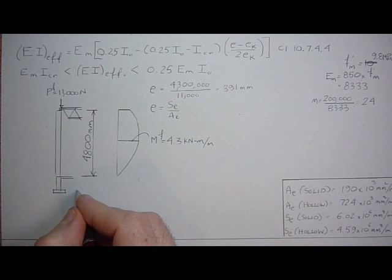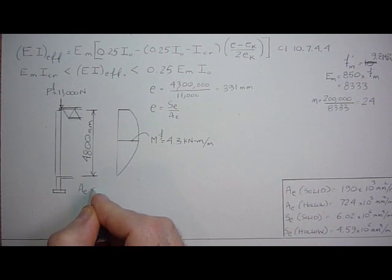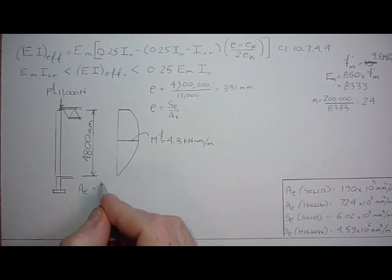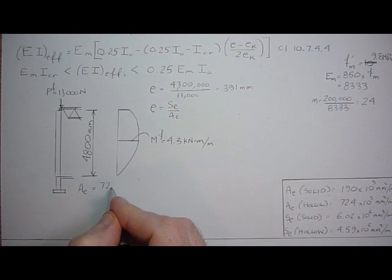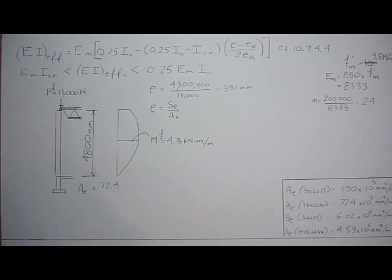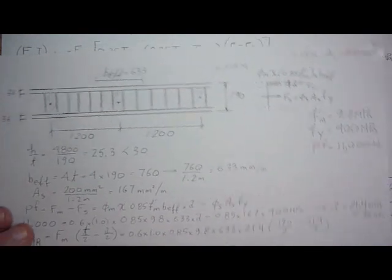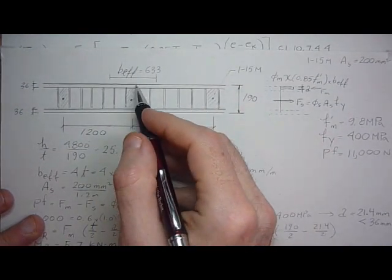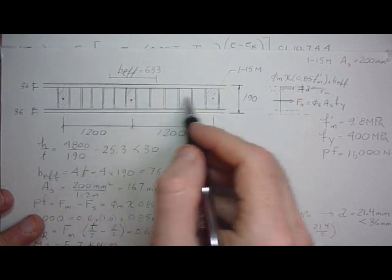So the true area effective is going to be the hollow area, 72.4, times how many cores are hollow—which is one, two, three, four, five out of the six, right? That's five, plus a half and a half. There's six cores in a pattern.